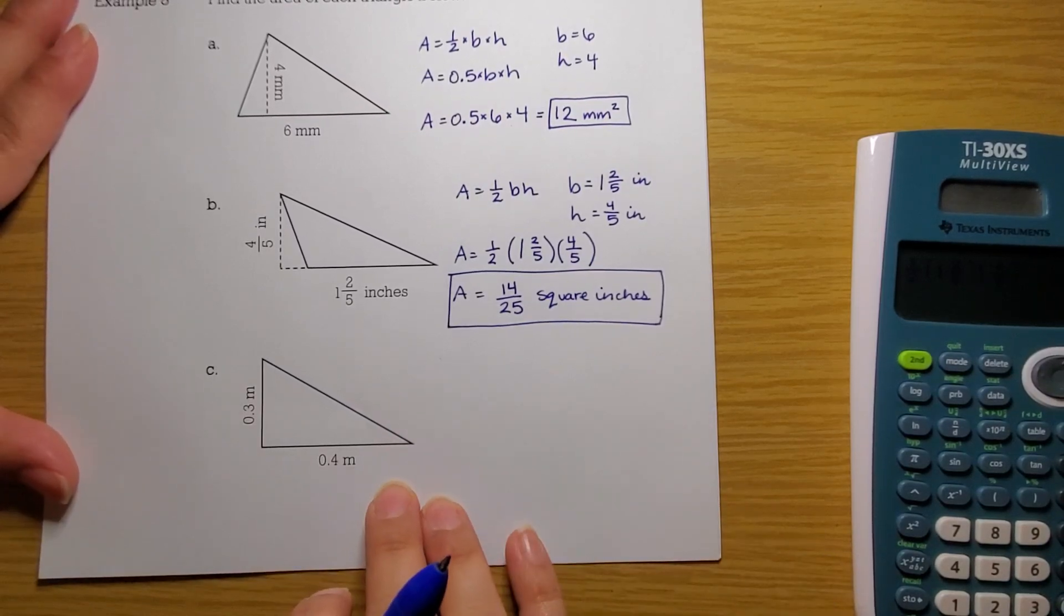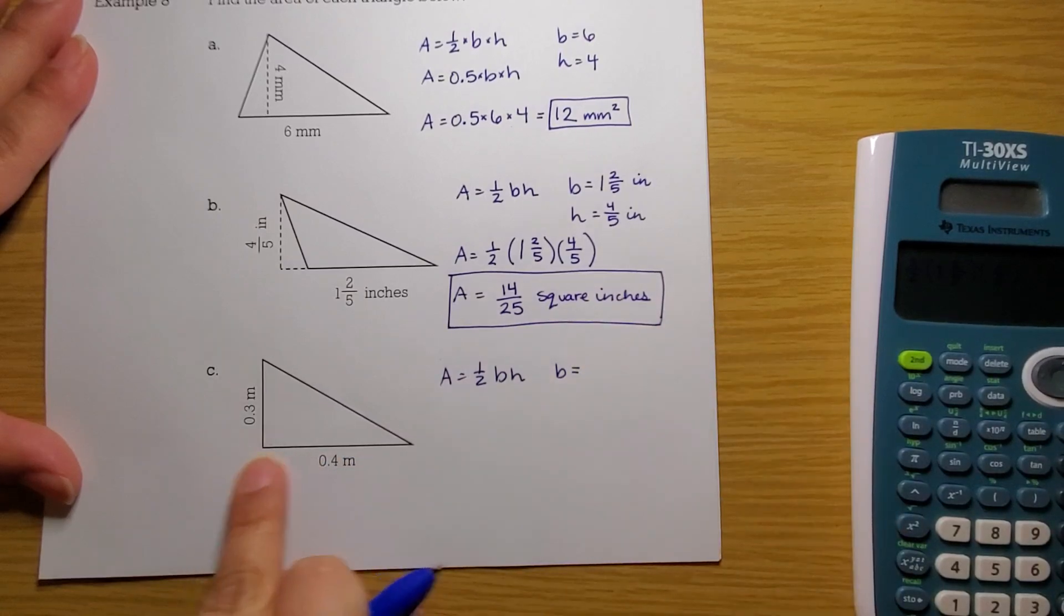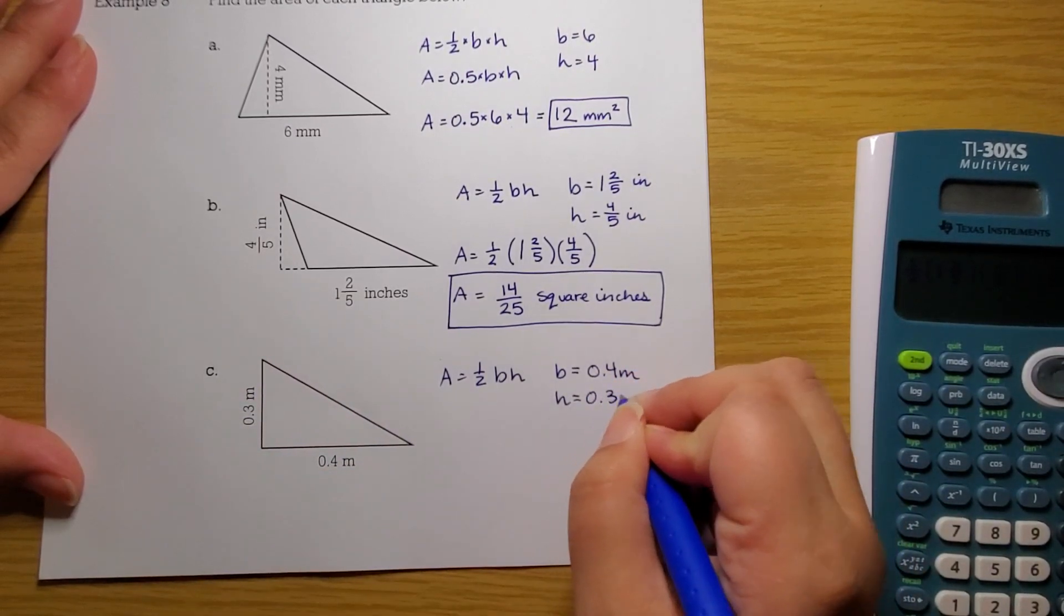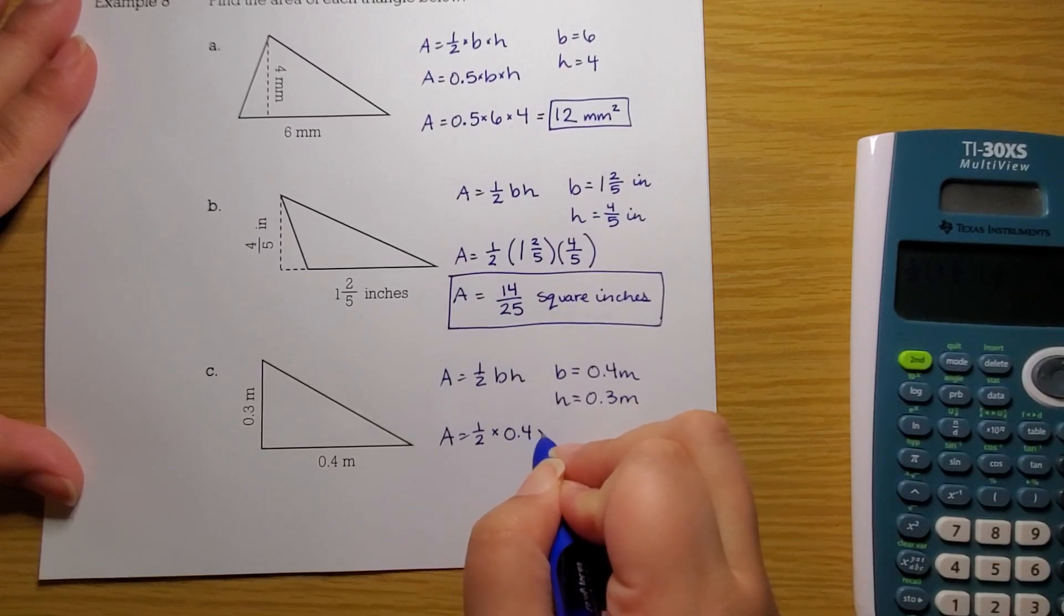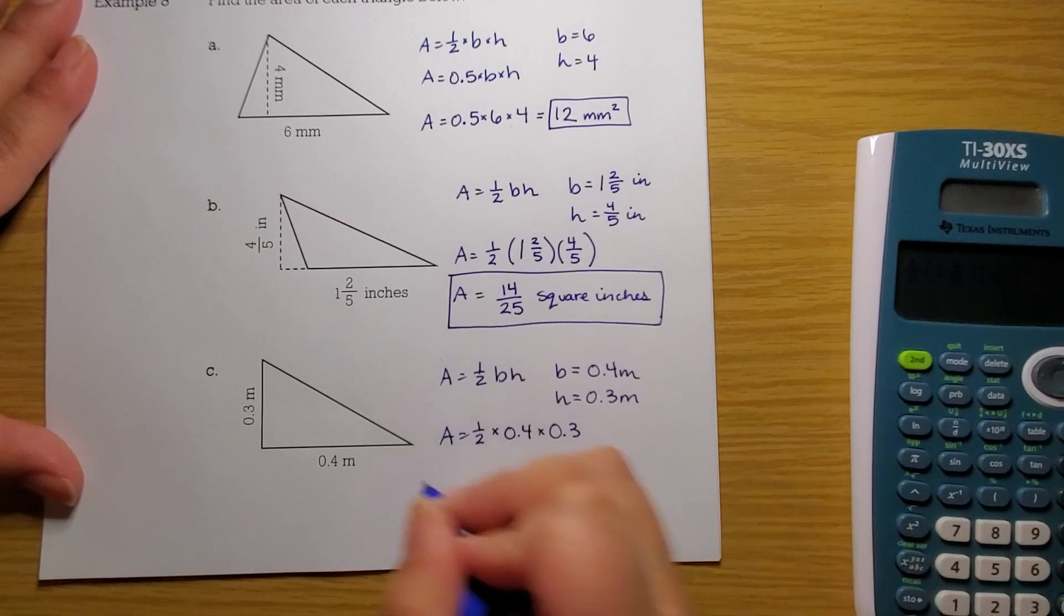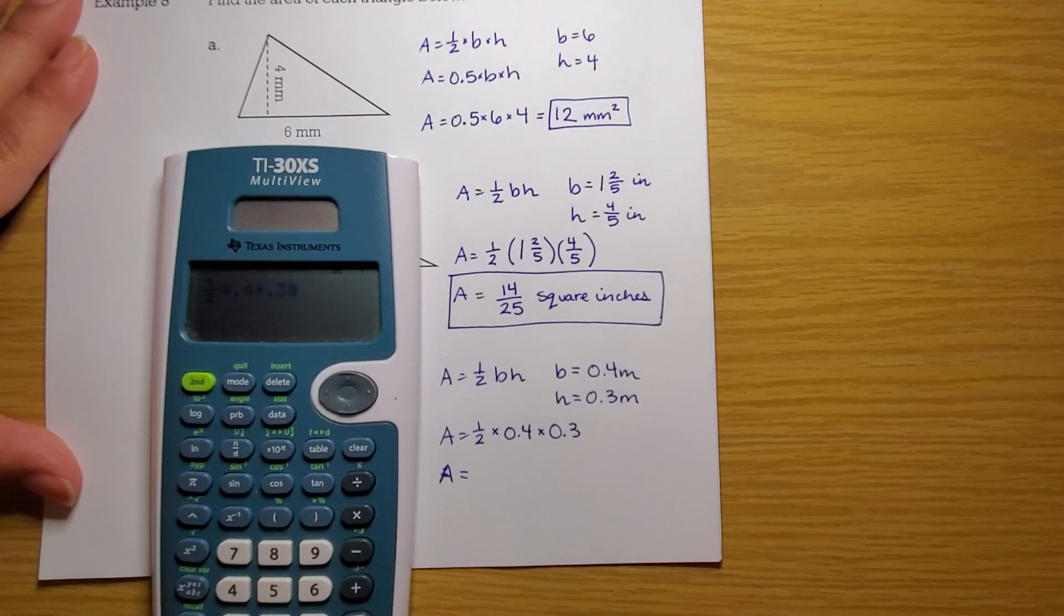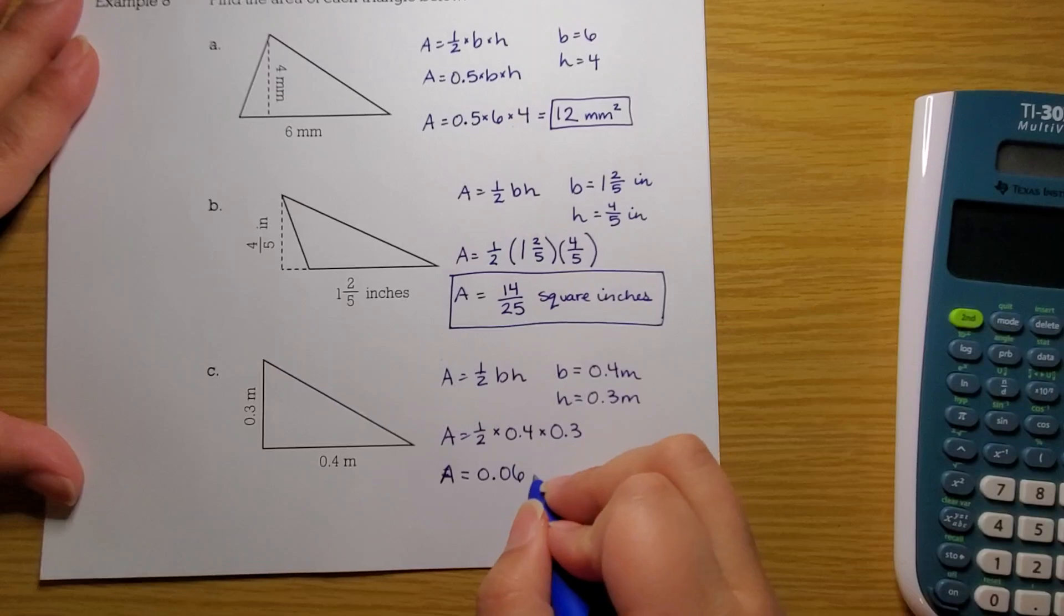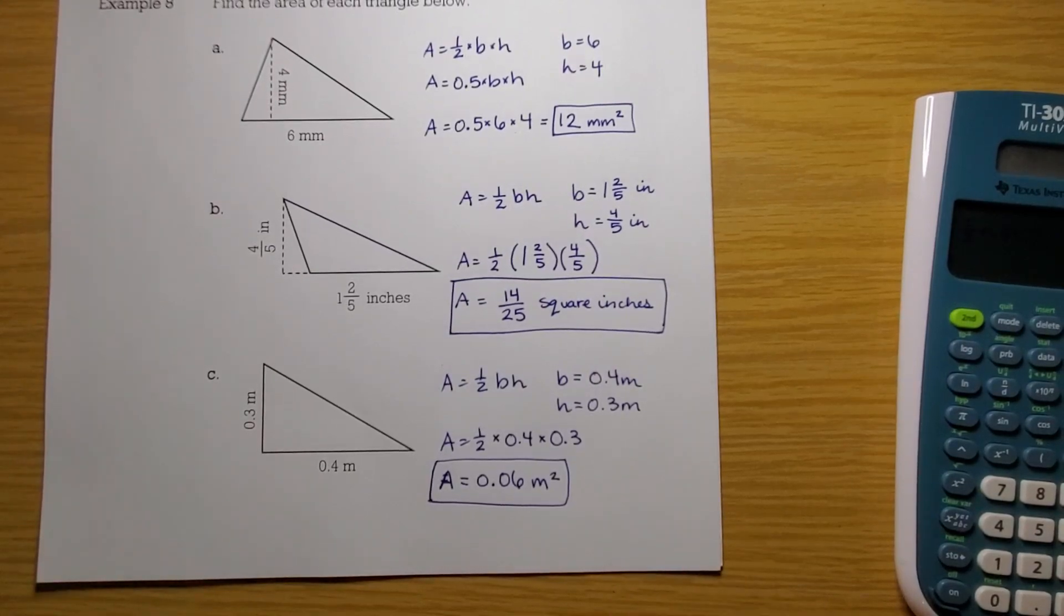Let's go ahead and do this last triangle together. Area is still 1/2 the base times the height. Our base is the floor, so 0.4 meters. And the height is 0.3 meters. All right, we know the drill now. Our area is 1/2 times that base of 0.4 times the height of 0.3. So, area is going to equal 1/2 times 0.4 times 0.3. We get 6 hundredths meters squared. So, that's it for finding our areas.